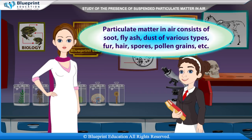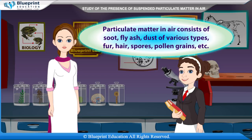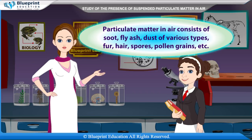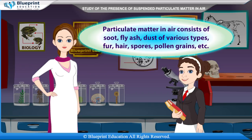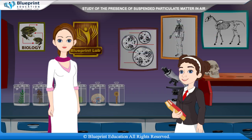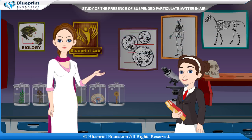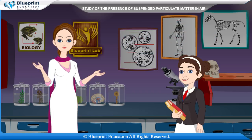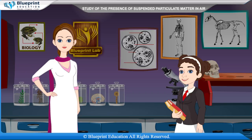Particulate matter in air consists of soot, fly ash, dust of various types, fur, hair, spores, pollen grains, etc. Let's do an experiment to study the presence of suspended particulate matter in air at two widely different sites.